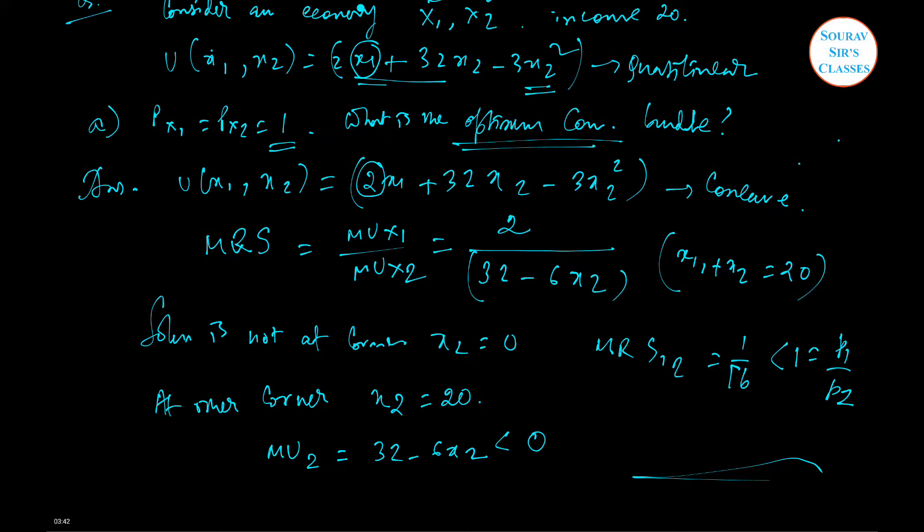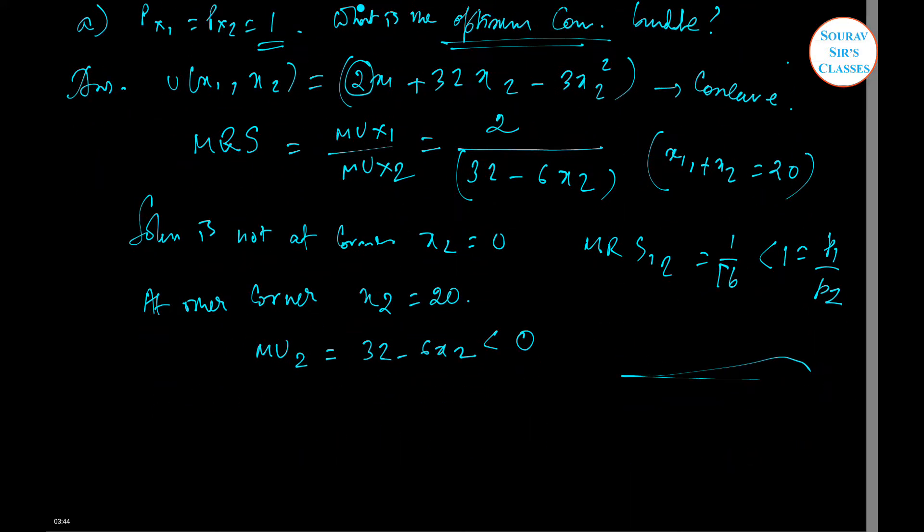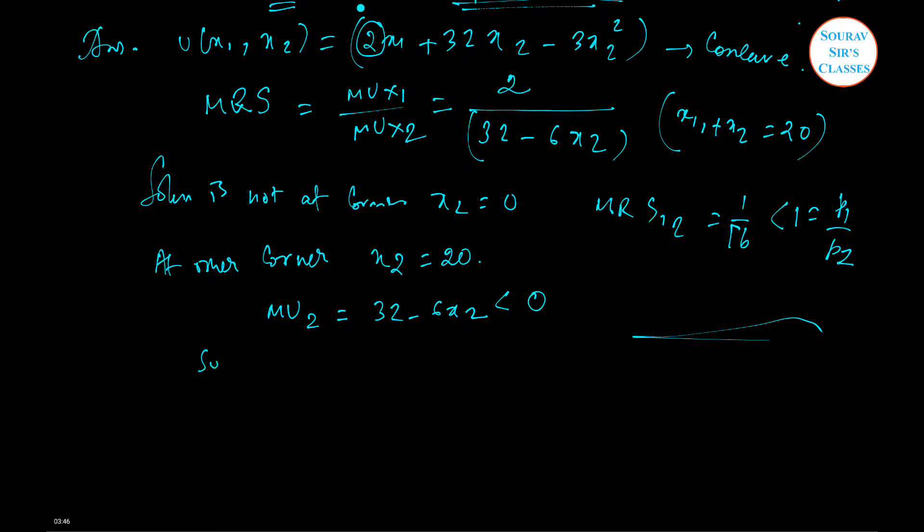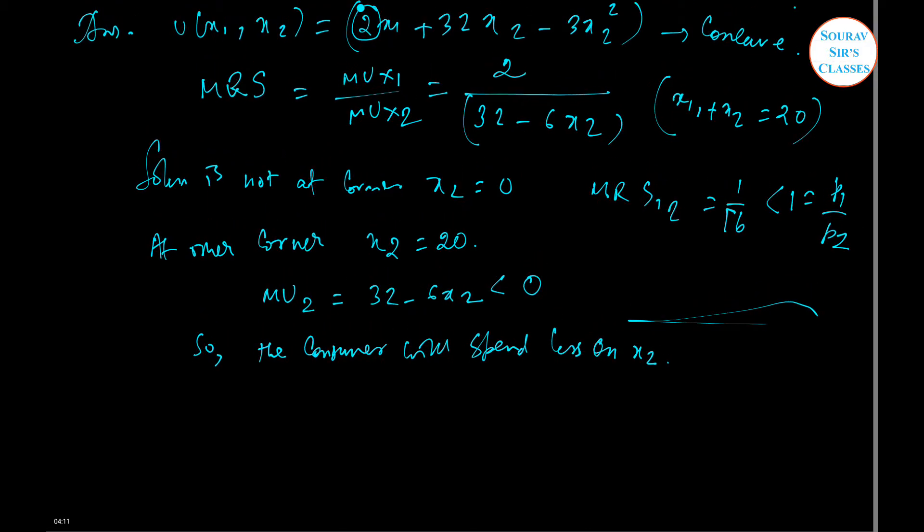Therefore it is beneficial to spend less on x2. So the consumer will spend less on x2. Hence the solution is in the interior and satisfies MRS equal to the price ratio, and we get the solution simply by solving.